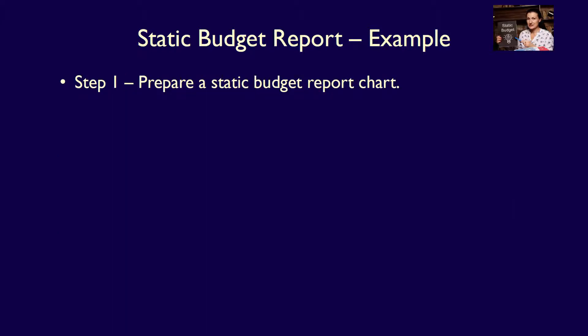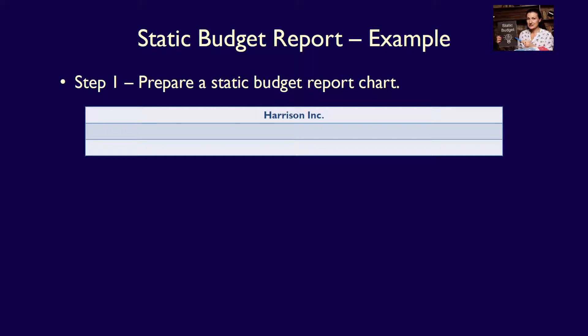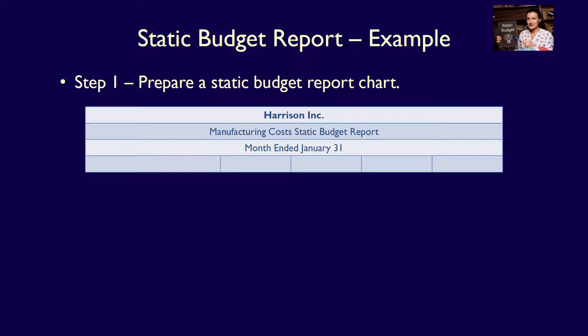Step 1 is to prepare the static budget report chart. We'll start with the company name, Harrison Inc., followed by the name of the report — Manufacturing Costs Static Budget Report — and the date, month ended January 31st. Next, we add the necessary columns, a total of 5. The headings will be Description, Budget, Actual, Difference, and F or U — F for favorable, U for unfavorable.